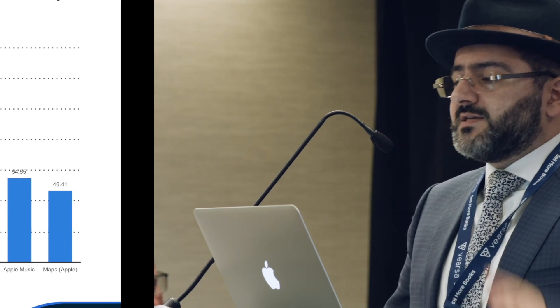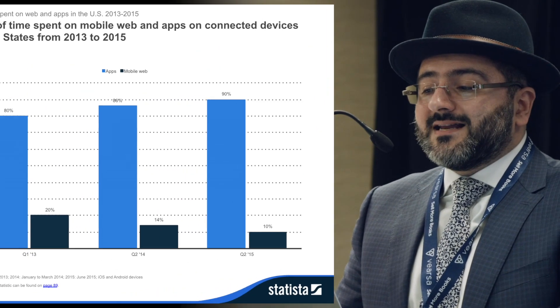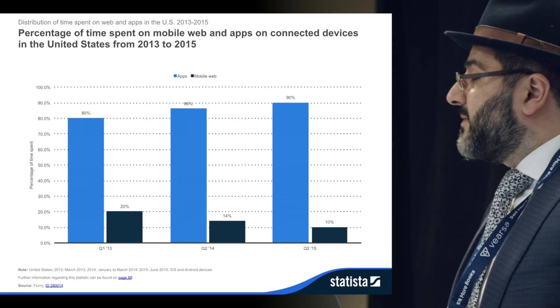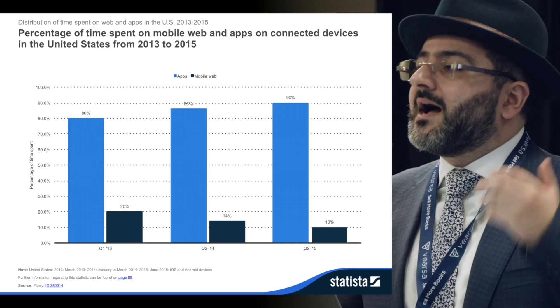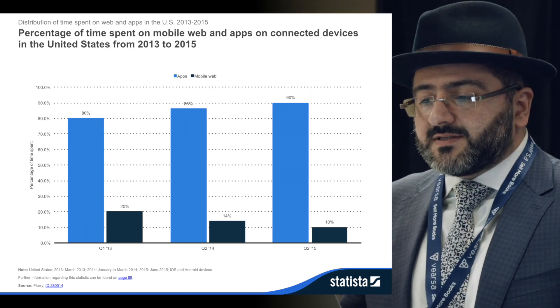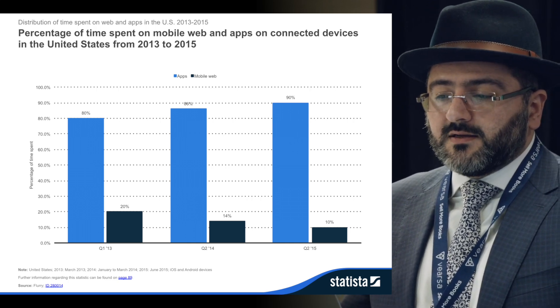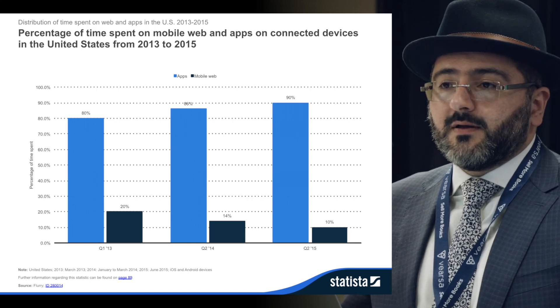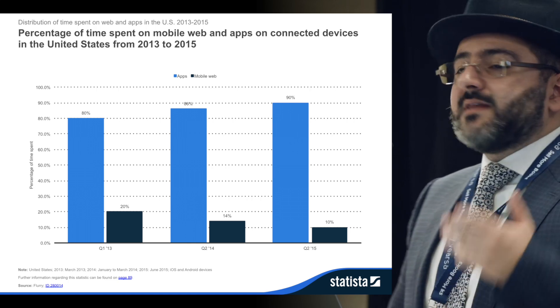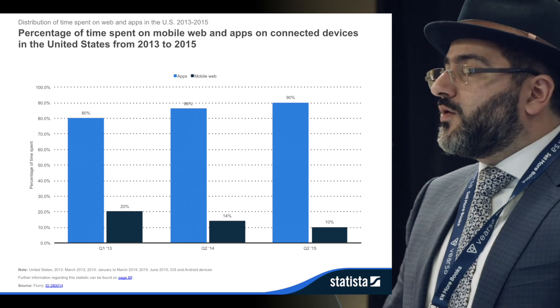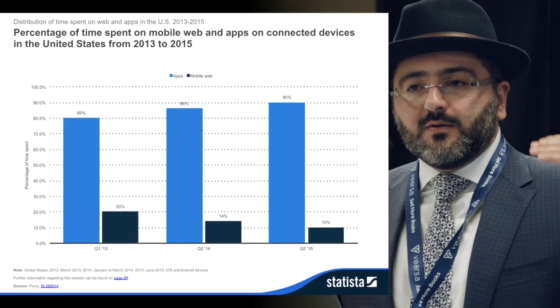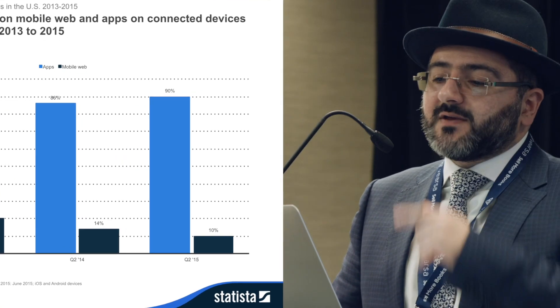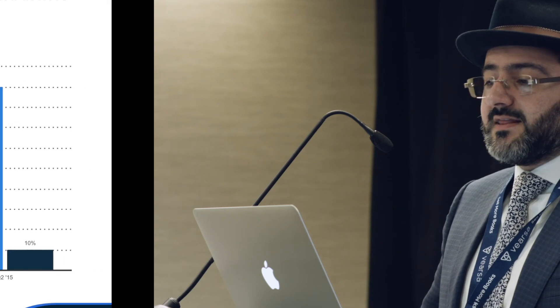As of August 2016, 80% of users are actually mobile. Regarding the percentage of time spent on mobile web and apps on connected devices in the United States from 2013 to 2015 — this is a crucial element for authors to understand. 80% of time spent in Q2 2013 was on apps alone, not mobile web. By Q2 2014, it rose to 86%, and by Q2 2015, it reached 90%. As the years go by, mobile web usage has dropped compared to actual app usage.